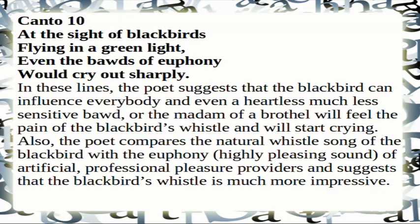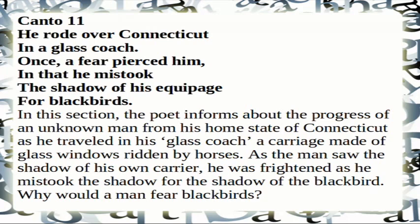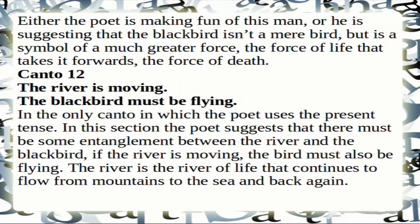Canto 11: 'He rode over Connecticut in a glass coach. Once a fear pierced him, in that he mistook the shadow of his equipage for blackbirds.' The poet describes an unknown man traveling in a glass coach — a carriage made of glass windows ridden by horses. As the man saw the shadow of his own carrier, he was frightened, mistaking it for the shadow of blackbirds. The poet is either making fun of this man or suggesting that the blackbird is a symbol of a much greater force — the force of life and the force of death.